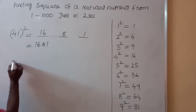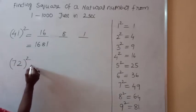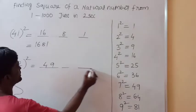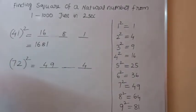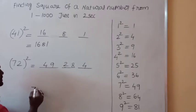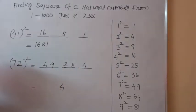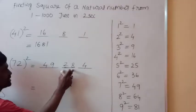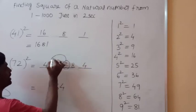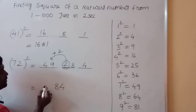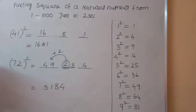Look at one more example: 72 squared. 7 square is 49, 2 square is 4, and 7 into 2 is 14, multiplied by 2 is 28. The last dash has 4 as it is. The second dash has 28: write 8 and carry 2. 49 plus 2 is 51. Thus 72 square is 5184.